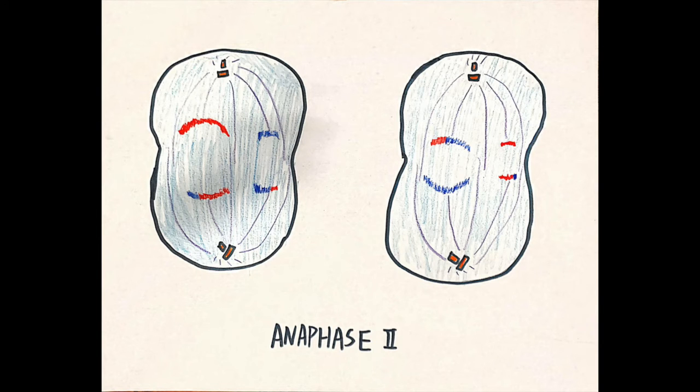Then in anaphase II, the chromosomes separate at the centromeres. The spindle fibers pull the separated chromosomes toward each pole of the cell. This phase describes the separation of sister chromatids of each chromosome. The separation and movement is due to the shortening of kinetochore microtubules.